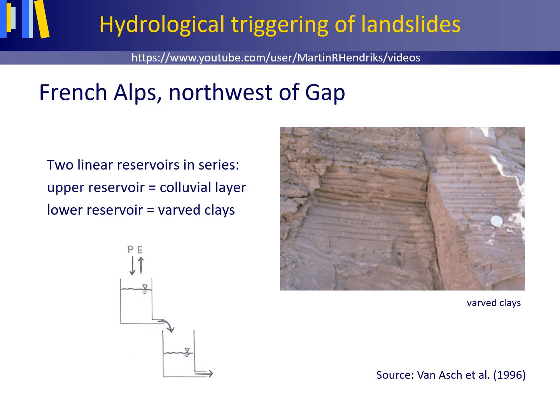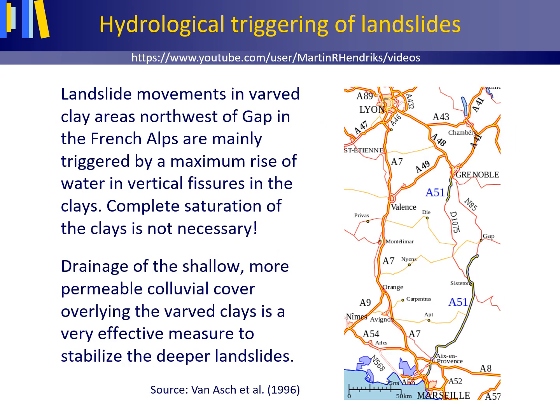From this setup and additional work, Van Asch and co-workers successfully showed that landslide movements in varved clay areas northwest of Gap in the French Alps are mainly triggered by a maximum rise of water in vertical fissures in the clays. Complete saturation of the clays is not necessary. As a very practical spin-off, their calculations also showed that drainage of the shallow, more permeable colluvial cover overlying the varved clays is a very effective measure to stabilize the deeper landslides.